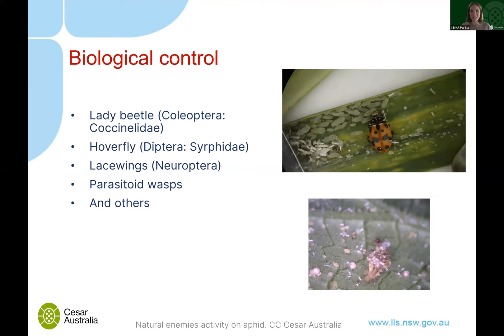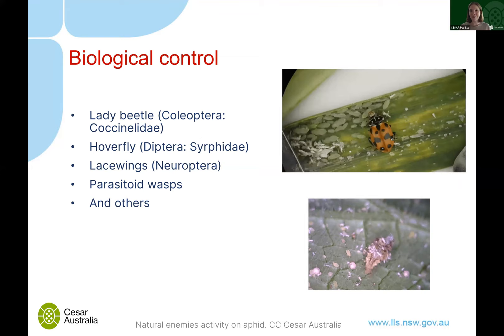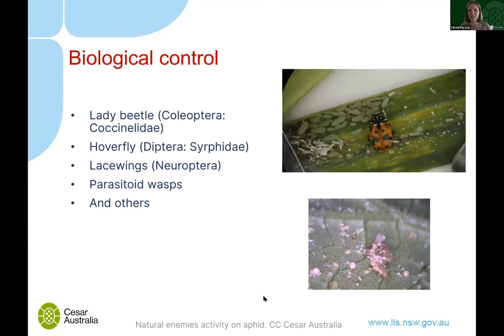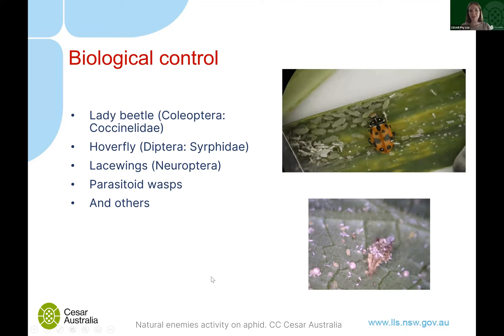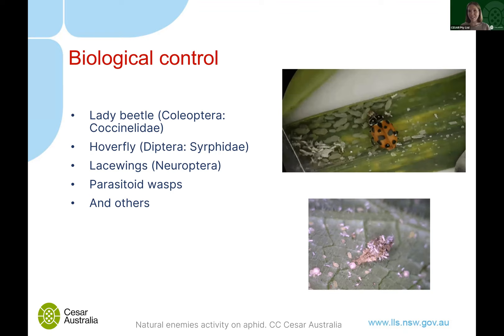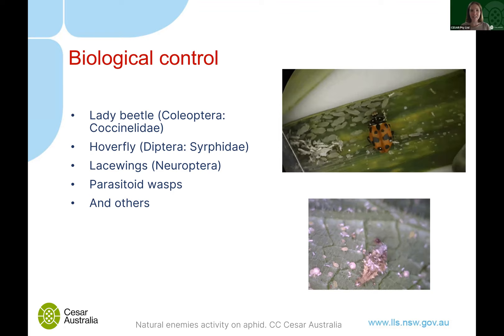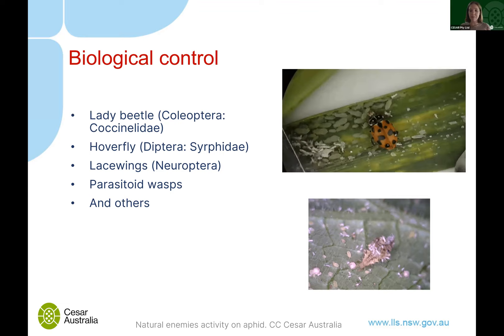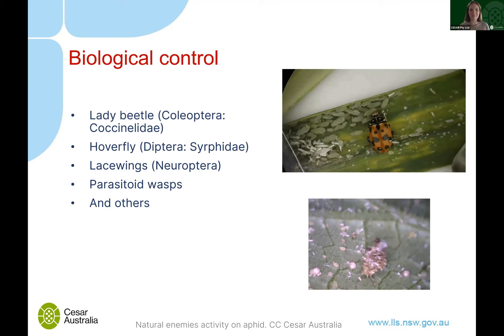Let's talk about non-chemical methods of control — my passion. Aphids are a really interesting example because there are many fantastic biological control agents available. Ladybirds and lacewing larvae can be seen chowing down on aphids. There's also a huge range of parasitoid wasps that lay their eggs inside aphids — the wasp grows up inside and then hatches out, killing the aphid. Spraying indiscriminate pesticides will wipe out this natural enemy community, making aphid problems much worse over time.